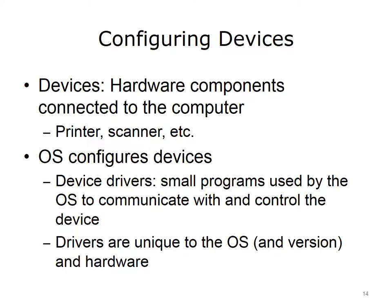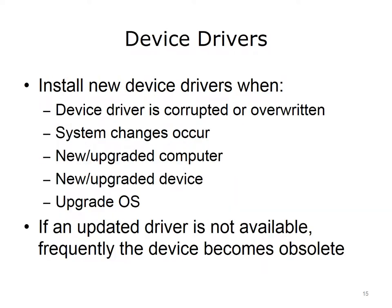Each driver is unique to the OS and the hardware device. After a device driver is successfully installed, the OS can control the device. If the device driver becomes corrupted or overwritten, a new one must be installed. Also, when there are any changes in the system, another version of the driver must be installed. When you get a new PC, you have to get drivers for all attached devices. New devices require new drivers. Upgrading the OS may require new device drivers, which are usually available online at the device manufacturer's website. If there are no new drivers available for old devices, these devices become obsolete.